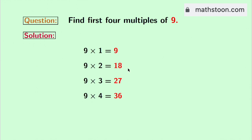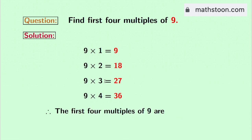We have obtained the first 4 multiples of 9, which are the red colored numbers. And these numbers are 9, 18, 27, and 36. And this is our final answer.